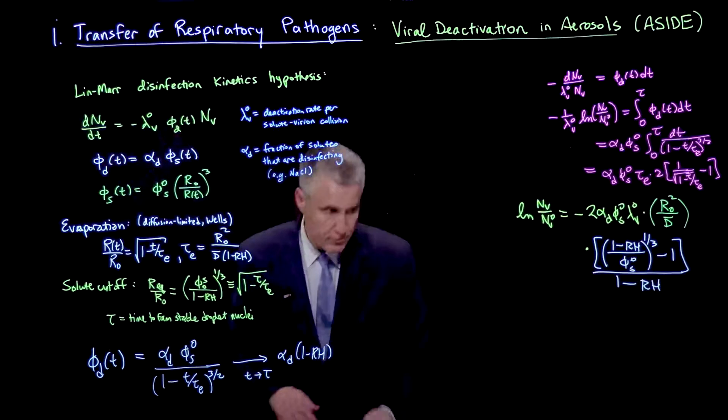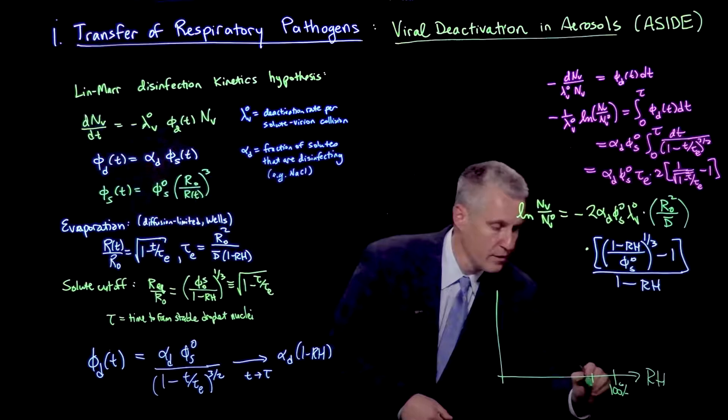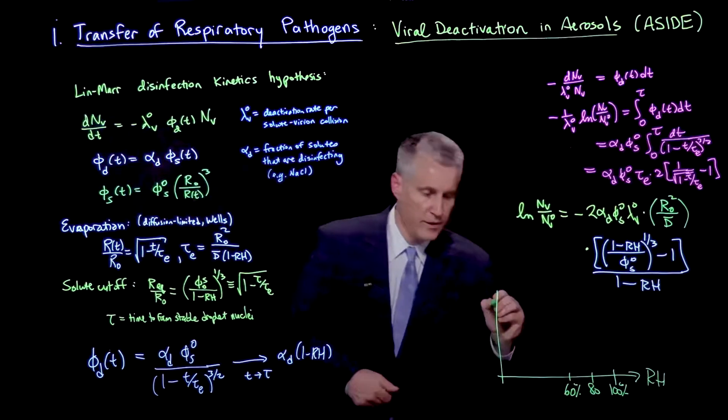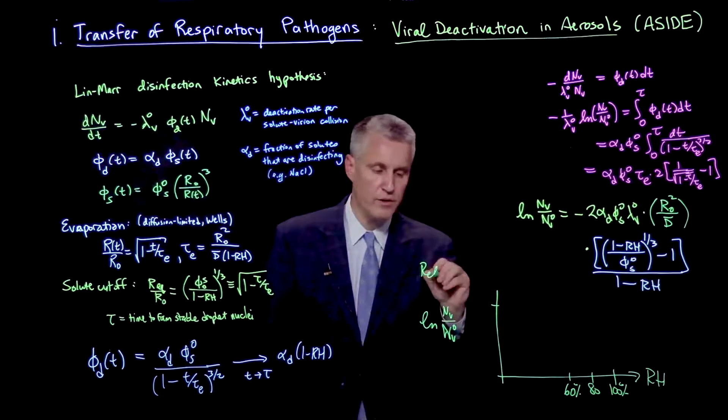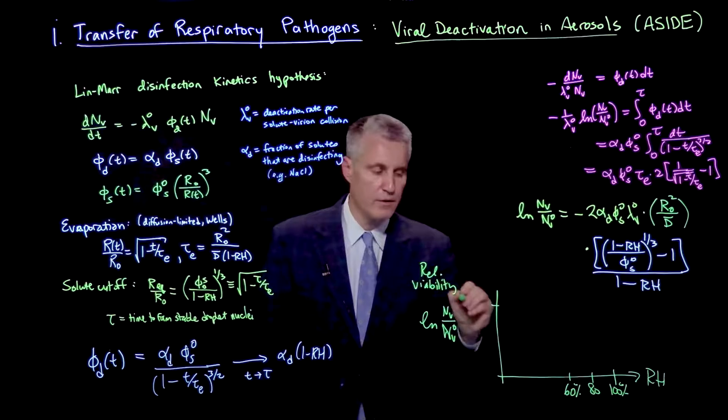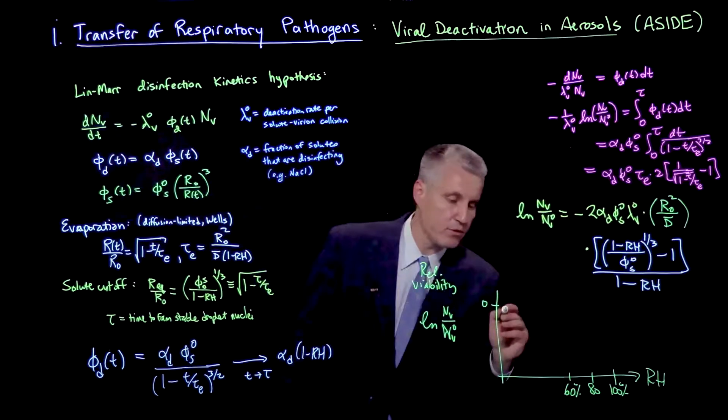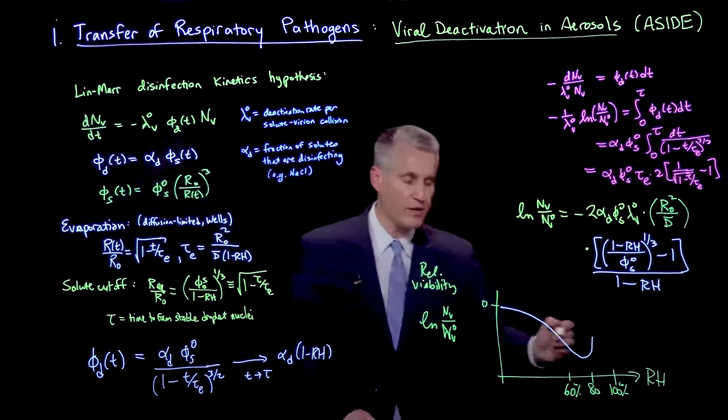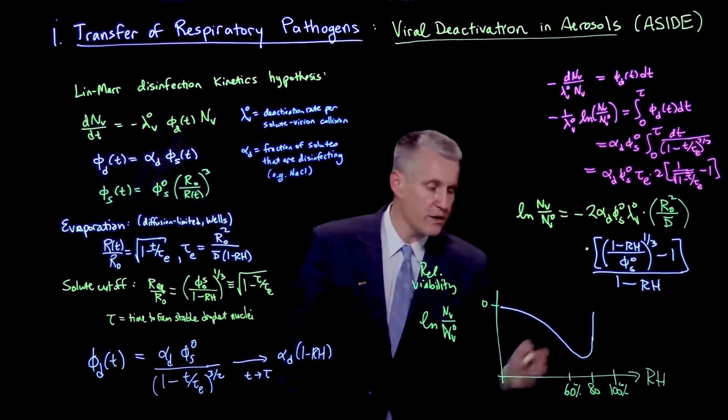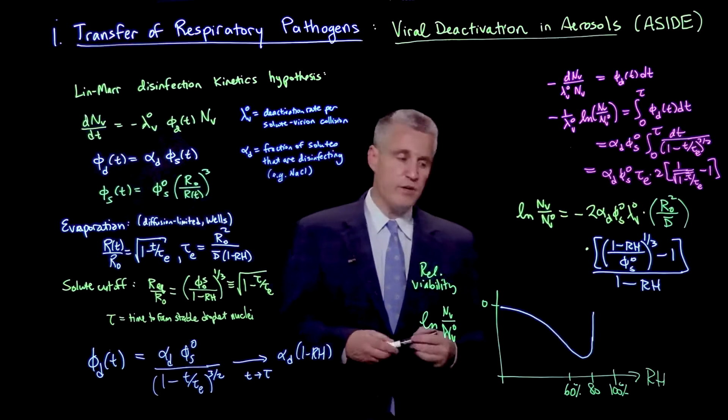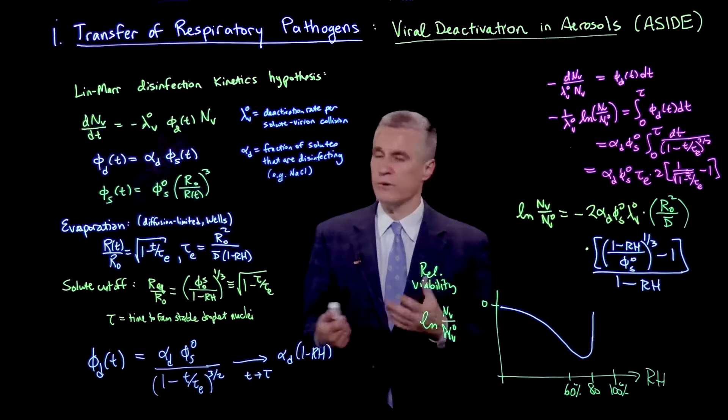If you plot this function as a function of relative humidity, the log of nv over nv0, which is our relative viability of the virus, then this white function decays like this. It reaches a minimum around 80, or in this range from about 60 to 80, depending on what the values of this parameter phi s 0 is. Then it goes back up again. We get a shape for the dependence of the relative humidity that nicely matches the experimental data and is consistent with the hypothesis of disinfection kinetics that was postulated by Linmar.